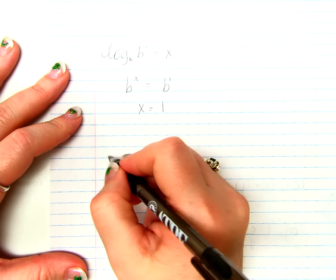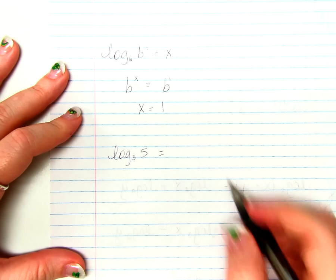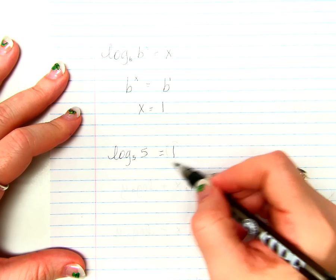So, if I said something like log base 5 of 5, what does that equal? Well, it's going to equal 1, as long as the base and the argument are exactly the same, it's going to be 1.